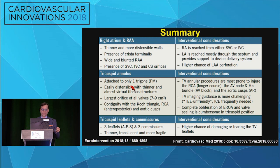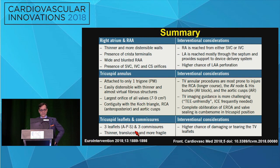To summarize the key differences: the right atrium is thinner and more distensible. We don't go through a septum for tricuspid procedures, so the device isn't anchored by the septum, which means less coaxiality. The tricuspid annulus is much bigger and more distensible. There are three leaflets, and the leaflets are thinner and more fragile, making them easier to tear.